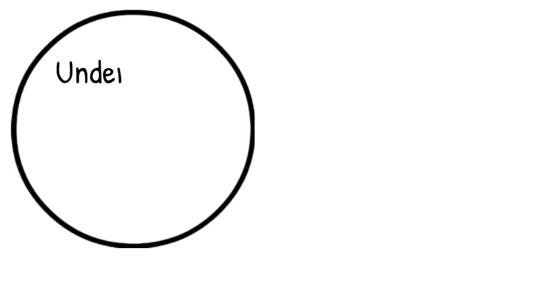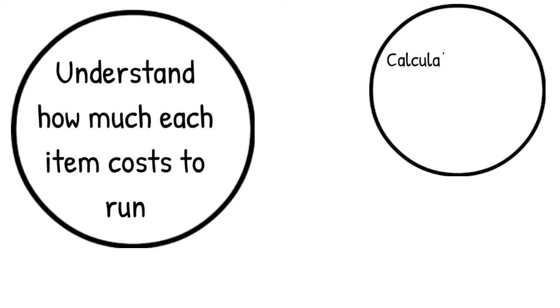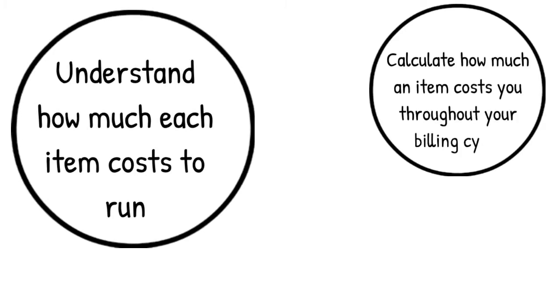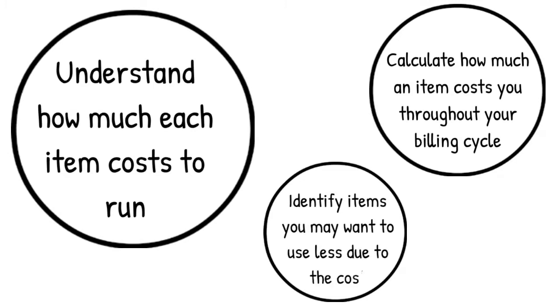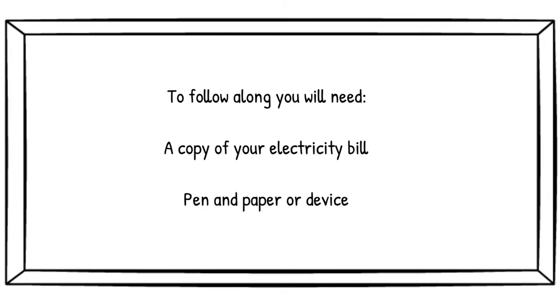By doing this, you can get an idea of how much each item in your home may cost to run. You can also calculate how much an item costs you throughout your billing cycle and identify items you may want to use less. If you would like to follow along at home, you'll need the following items: a copy of your electricity bill and a pen and paper or a device.